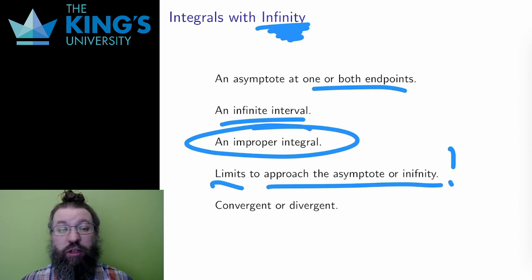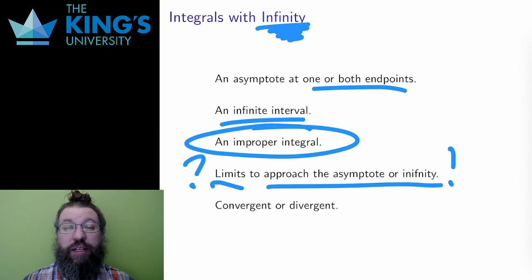This limit may or may not exist, so the improper integral itself may or may not even have an answer. If the limit exists, if it has an answer, it is called a convergent improper integral, and otherwise it is called divergent.